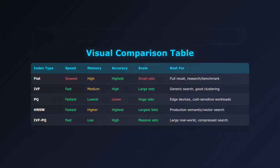Let's put everything together with our comparison table. Each index type occupies a different sweet spot in the speed-memory-accuracy triangle. Flat indexing gives perfect accuracy but is slowest. IVF offers fast search for large datasets. PQ is the memory champion for huge datasets. HNSW provides the best overall balance — it's fast, accurate, and scales well. IVFPQ combines clustering with compression for massive memory-constrained deployments. Use FLAT for research and benchmarking, IVF for general production search, PQ for edge devices or mobile apps, HNSW for most production systems, and IVFPQ when you need to handle billions of vectors efficiently.